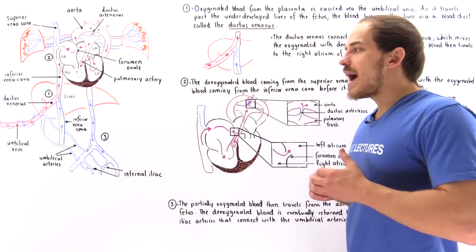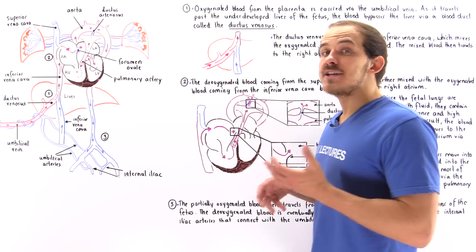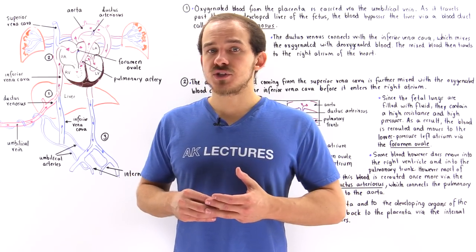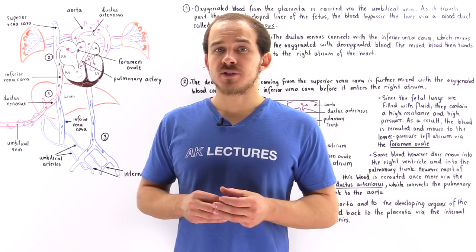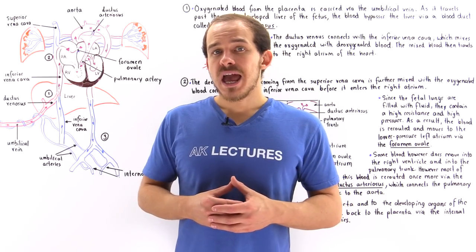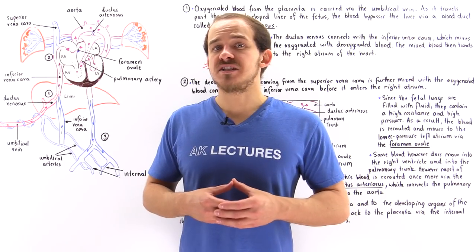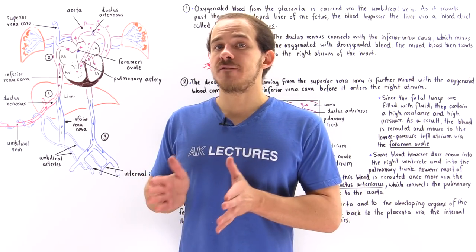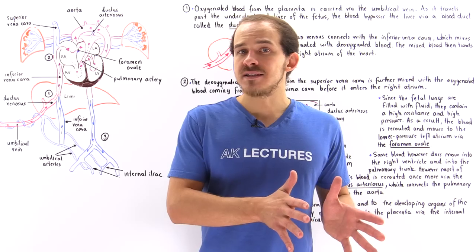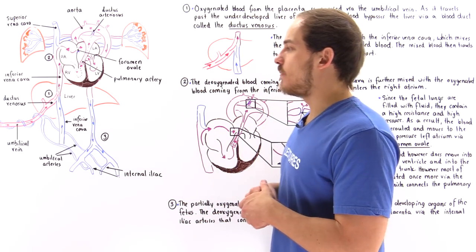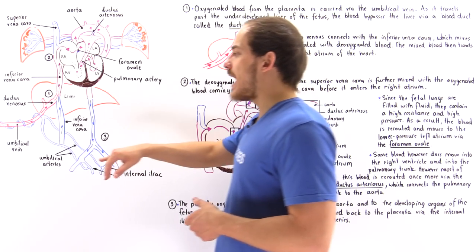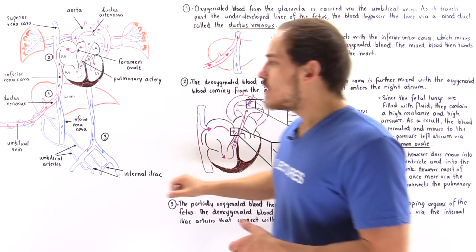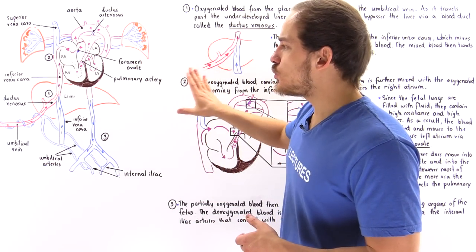Let's begin inside the placenta. Inside the placenta, we have an exchange taking place: oxygen and nutrients are picked up by the blood of the fetus, while carbon dioxide and other waste products are deposited into the blood of the mother. Once this exchange takes place, a special blood vessel called the umbilical vein carries the oxygenated and nutrient-filled blood away from the placenta and towards the heart of the developing fetus. Just like any vein always carries blood to the heart, the umbilical vein always carries blood to that heart.